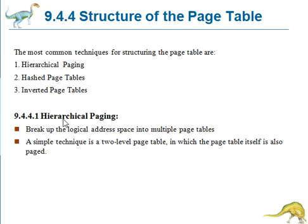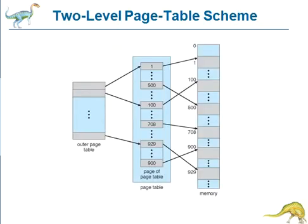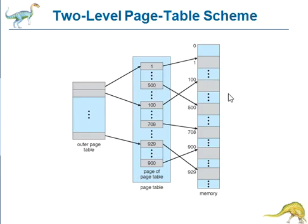There are several ways to accomplish this division. One way is to use a 2-level paging algorithm in which the page table itself is also paged. Now, we have a diagram. This is the outer page table and page table. Here the inner page table — the outer page table is having page number and page offset. Again, the page offset is representing one more page index in the physical memory.